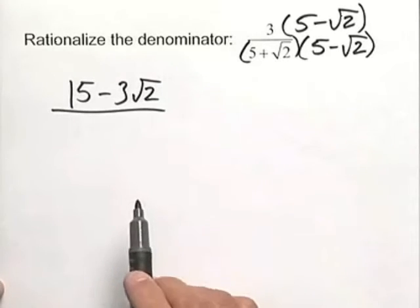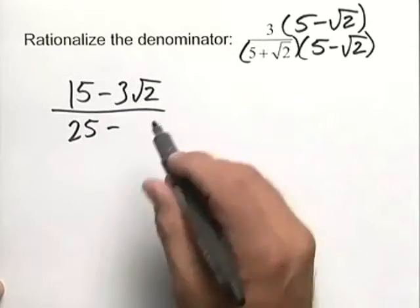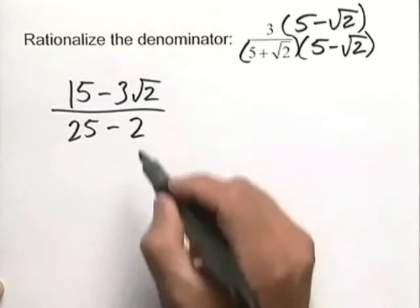We're going to FOIL the bottom expression to come up with 25 minus the square root of 2 squared, which is simply 2.